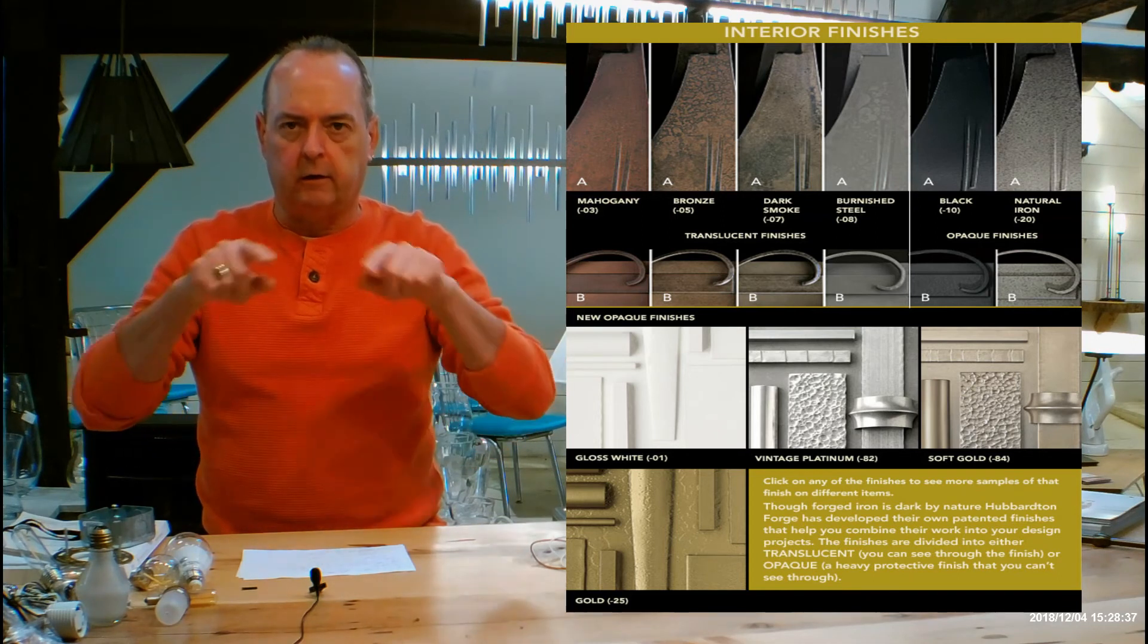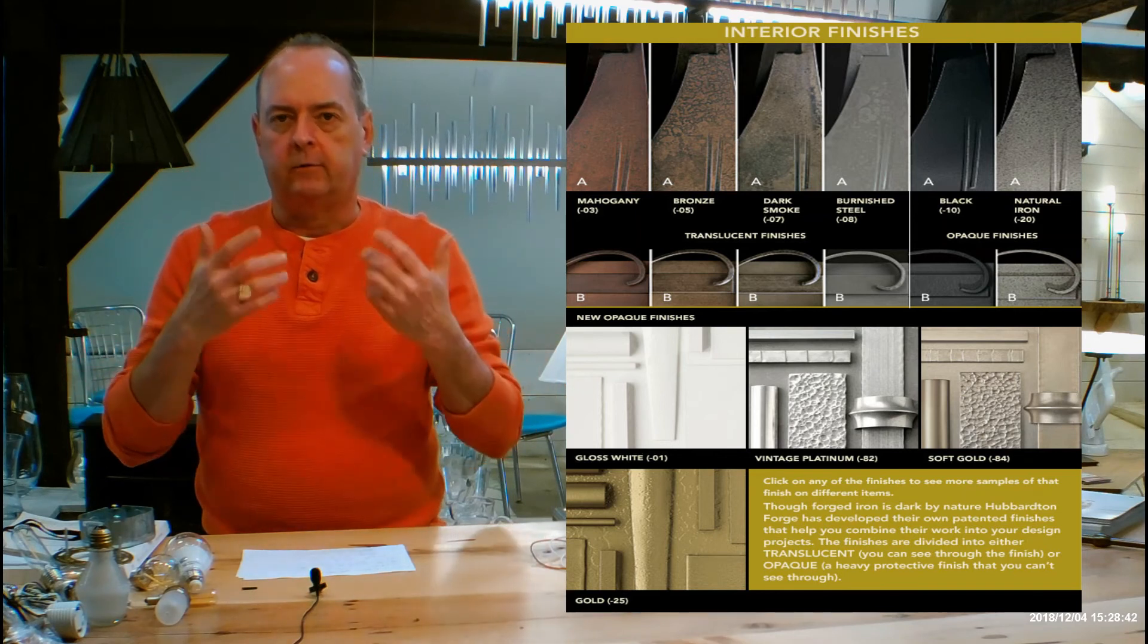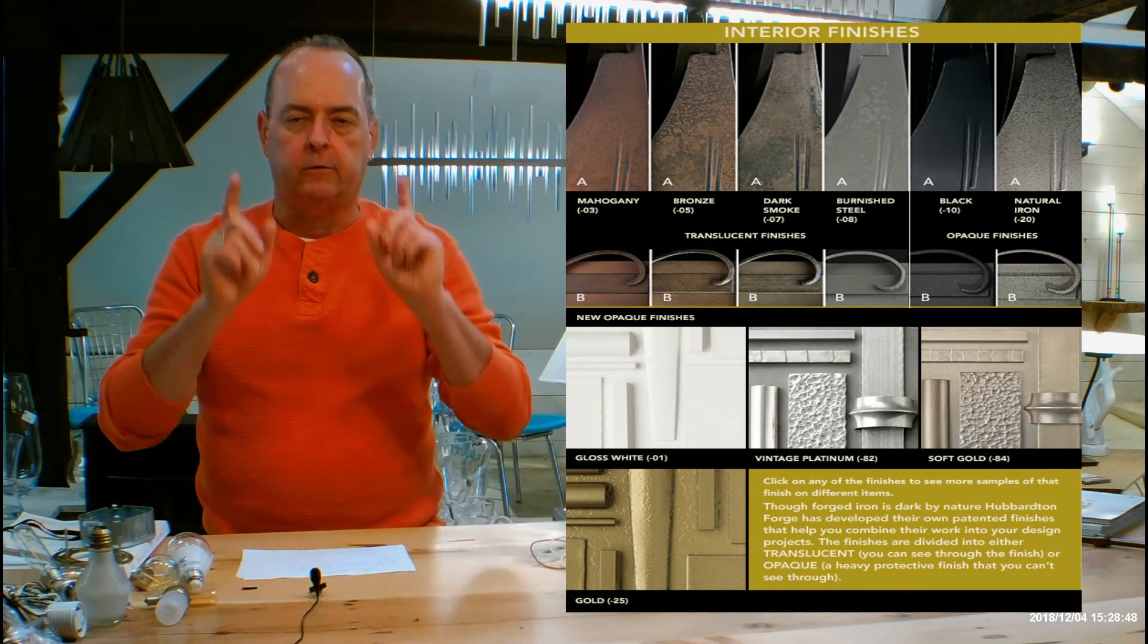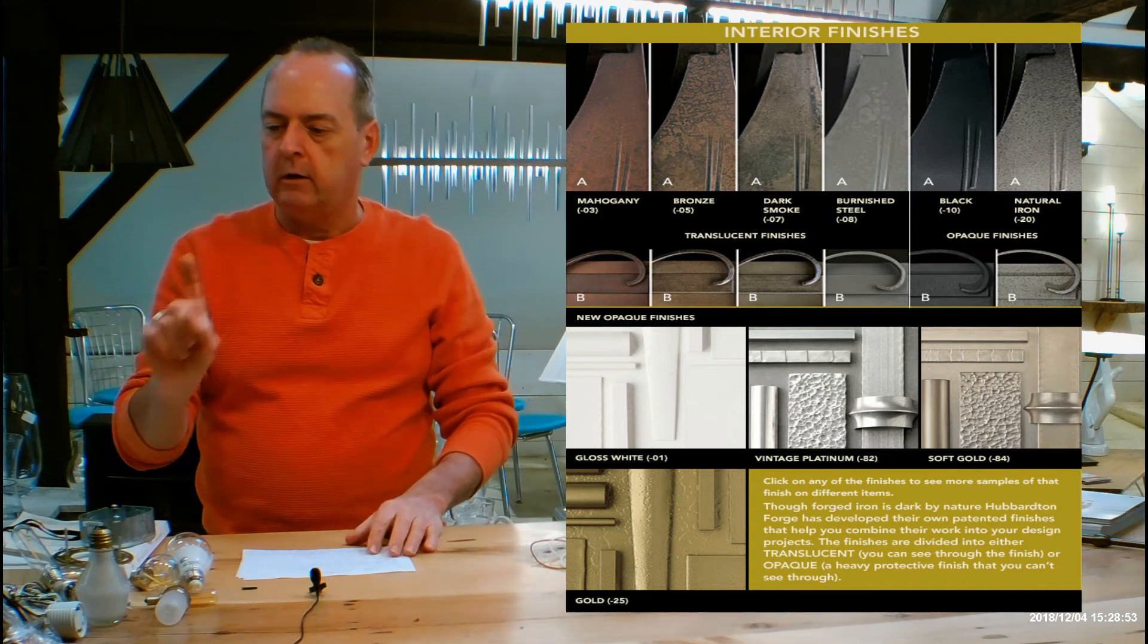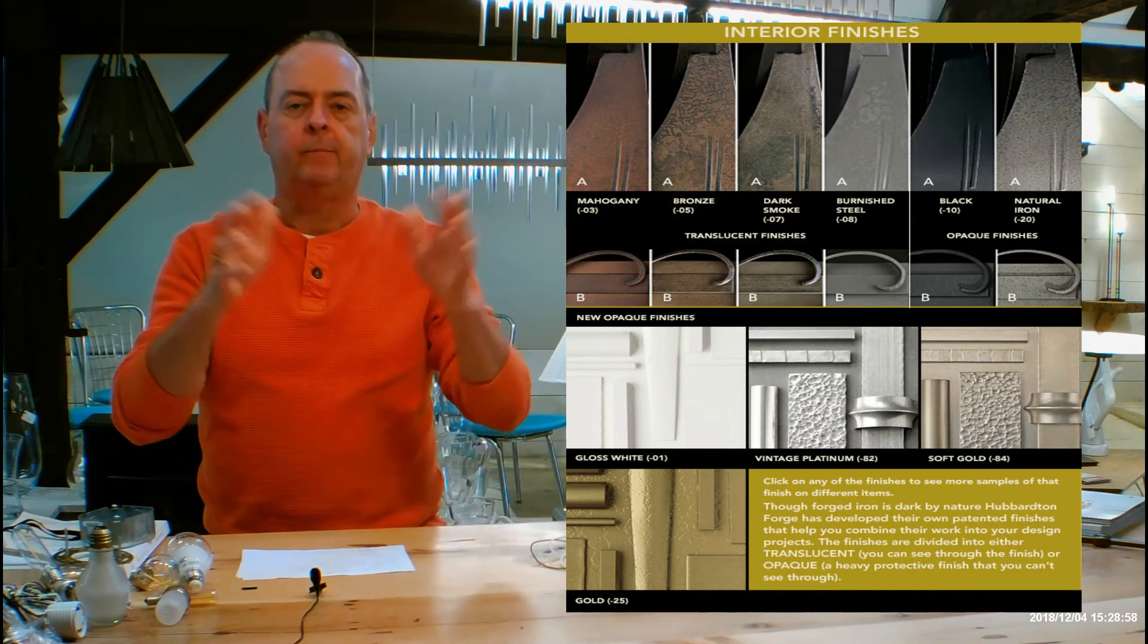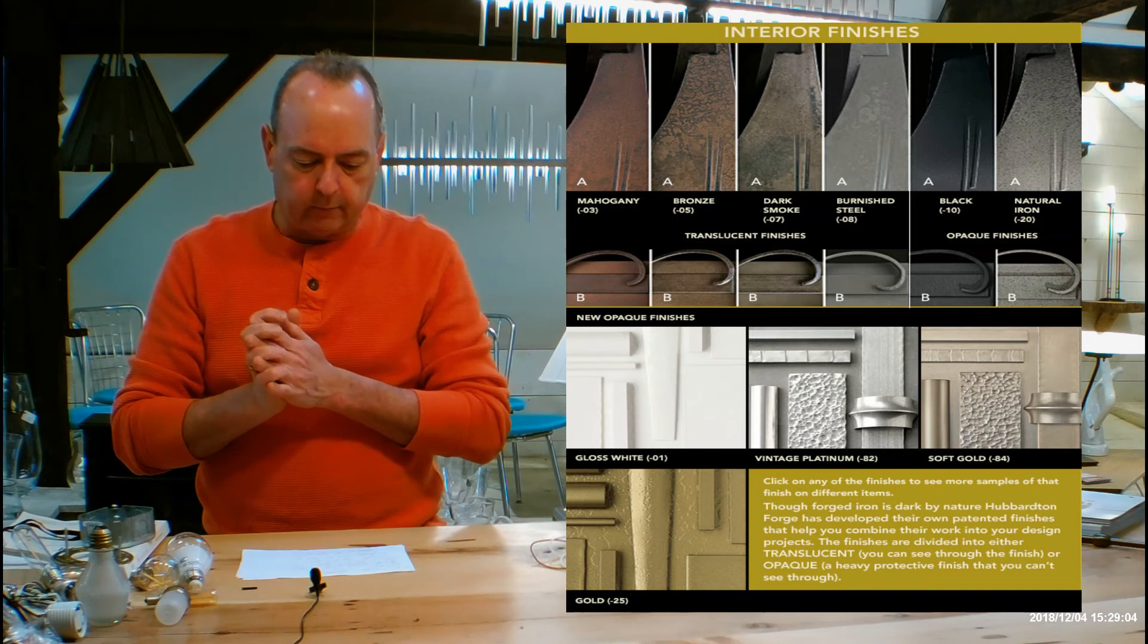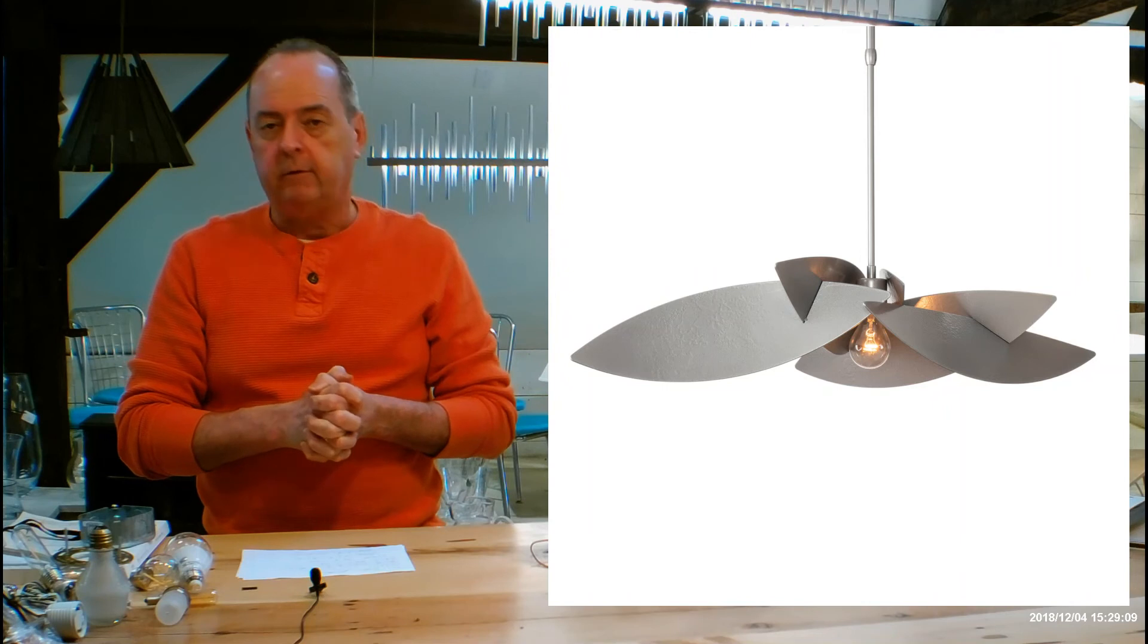I'm going to be referencing a chart, a color chart just below that, so scroll down. You're going to see that chart. You'll notice there's different pictures on the charts and they have letters A on them, letters B on them. I'm talking about that in that video, so watch the video, use the chart. When you're done with all that, go back to the chart and you can click on any of those pictures—dark smoke, burnished steel, natural iron. Bigger windows are going to pop up, it's going to show you more samples of whatever you just clicked on. So lots of details and information there.